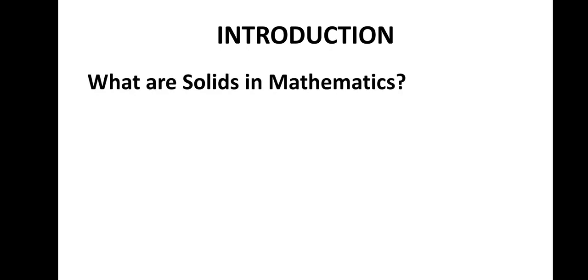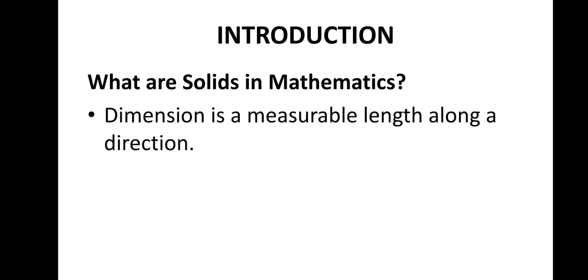Now, introduction. What are solids in mathematics? As the chapter name is visualizing solid shapes, first of all we need to be clear about what are solids. Shapes are the figures which we deal with, like triangles, rectangles, squares, cubes, spheres — all these come under the category of shapes. But there is a difference between 2D and 3D shapes. To understand solid shapes, we should be aware about dimension.